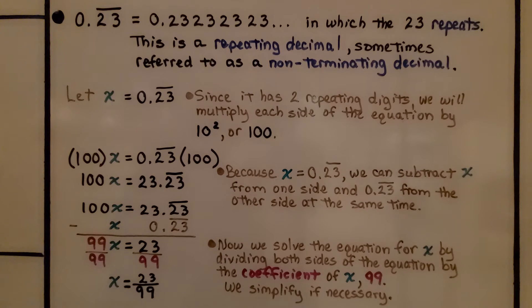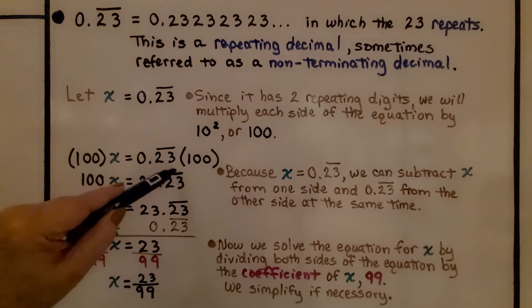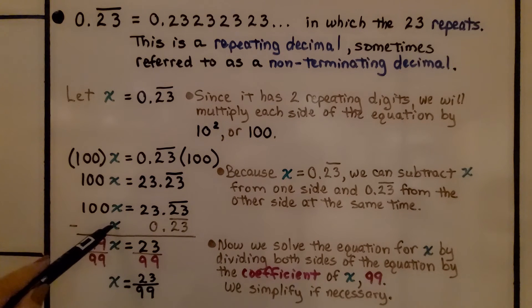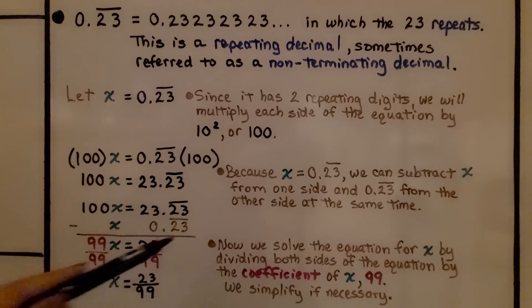We can let x equal the 0.23 that repeats. And since it has two repeating digits, we'll multiply each side of the equation by 10 to the second power or 100. This means 10 times 10. We multiply x by 100 and we multiply the 0.23 that repeats by 100. That's going to give us 100x is equal to 23.23 with this repeating. Now, we can subtract x from one side and the 0.23 that's repeating from the other side at the same time.